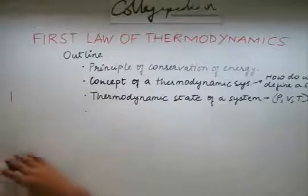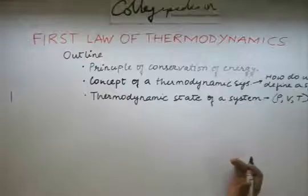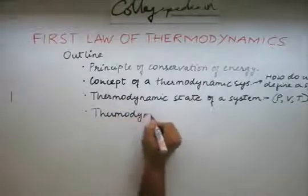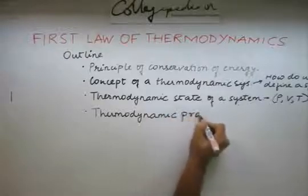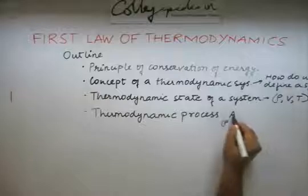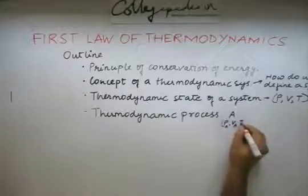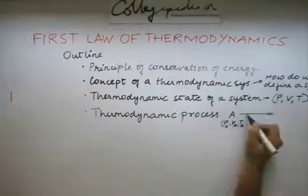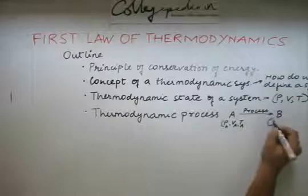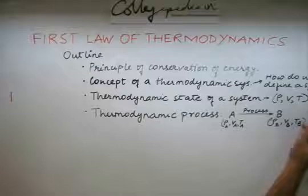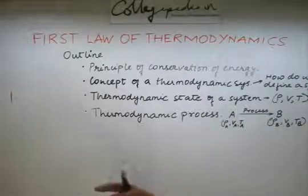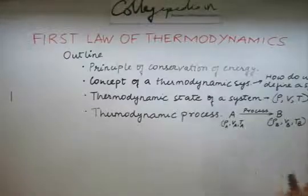When we bring or when we take our system from one state to the other, it is generally done by a process. That process is known as the thermodynamic process. This process basically takes our system from state A - say at state A our system was at PA, VA and TA - we take this system from A to B by some process. This state B is PB, VB and TB. Based on the process, a lot of different quantities or a lot of different fundamental existing quantities will change or remain constant.